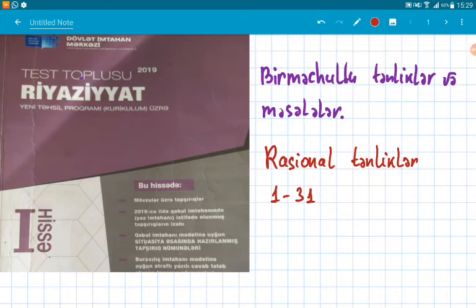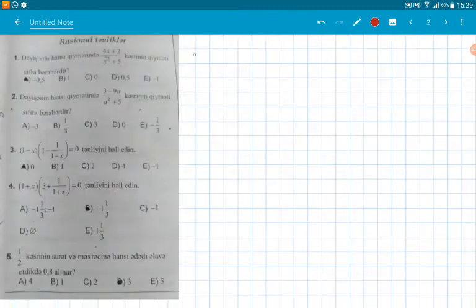Let's continue our explanation with rational equations. These are questions from 1 to 31. Let's start our explanation with the first questions.